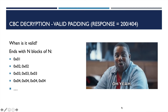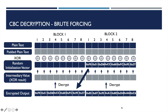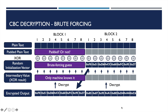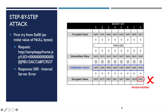So the decryption becomes very simple. We can just make brute-force guesses on the initialization vector and see if the plain text is padded correctly accordingly. If it is, we can go back and calculate the intermediary value that was originally unknown to us. So let's perform a step-by-step attack. In the first step, we insert 16 bytes of zeros at the beginning of our input. This will isolate the first block by sending a value with a null initial value and receive a 500 error.